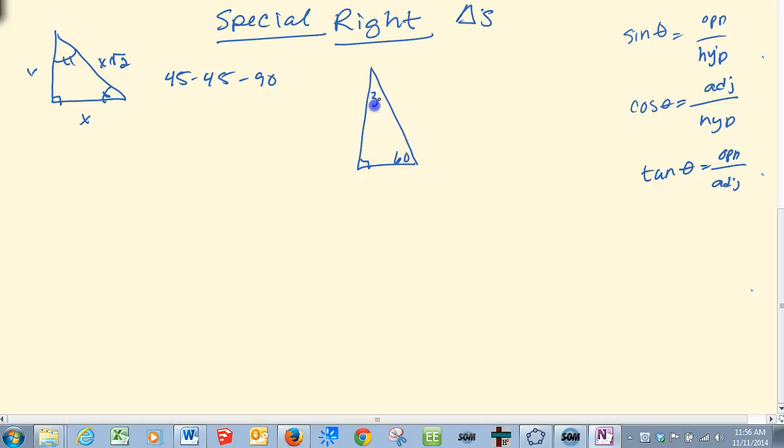Here's the 60-30-90. Watch your labels on these. They won't always be oriented or drawn to scale. x, 2x, x square root 3. These models help you solve problems quickly.